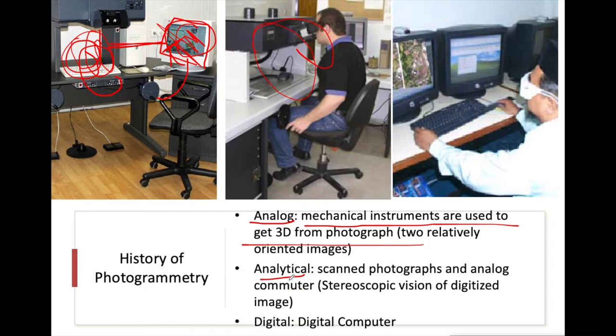The present generation is called digital photogrammetry, where our photos are not photographs but images, because our cameras use sensors instead of film. Whatever we get is already in image form — already in digitized form — because images are digital numbers. We generate 3D from these images. That is called digital photogrammetry.